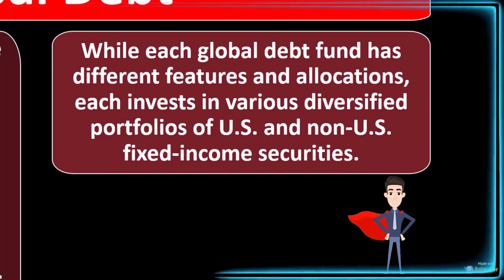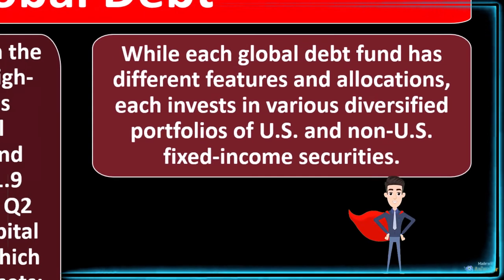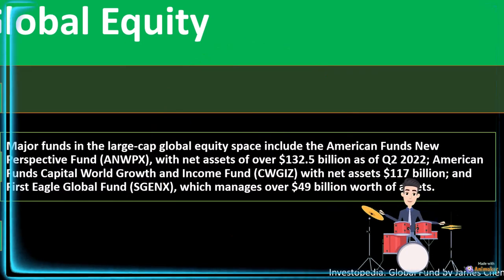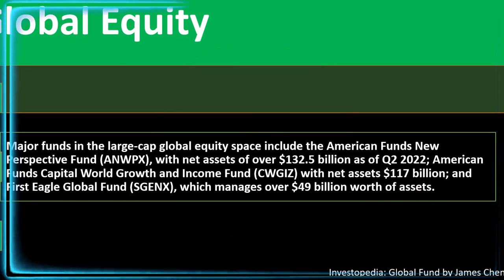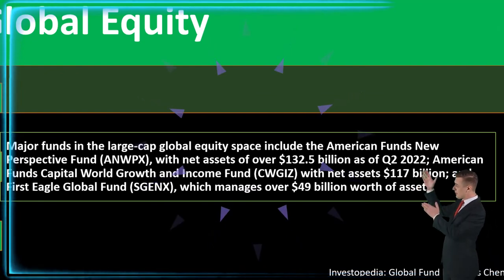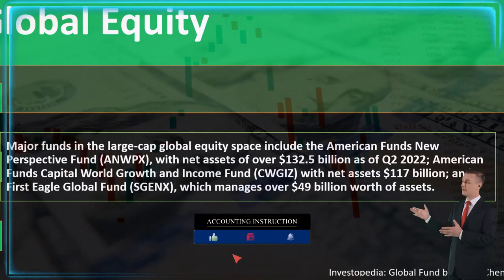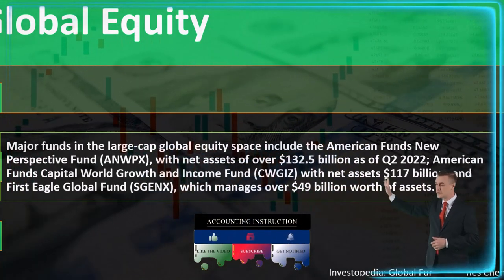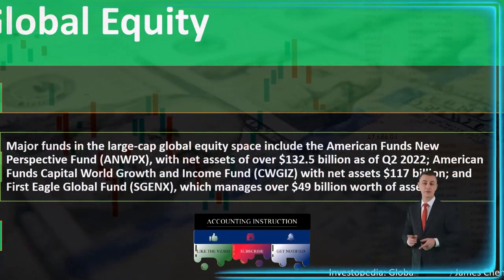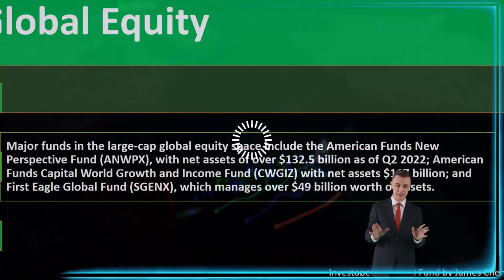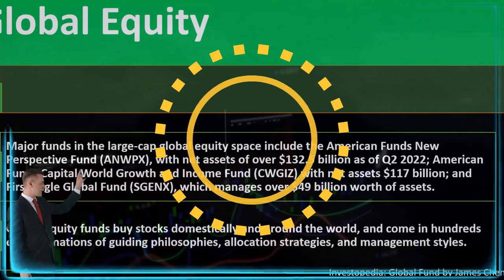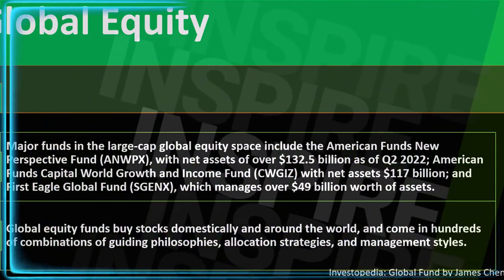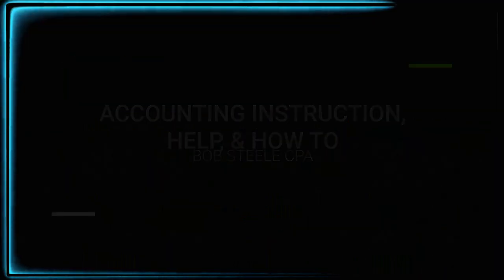Global equity: Major funds in the large-cap global equity space include the American Funds New Perspective Fund (ANWPX) with net assets of $132.5 billion as of Q2 2022, American Funds Capital World Growth and Income Fund (CWGIZ) with net assets of $117 billion, and First Eagle Global Fund (SGENX), which manages over $49 billion worth of assets. Global equity funds buy stocks domestically and around the world and come in hundreds of combinations of guiding philosophies, allocation strategies, and management styles.